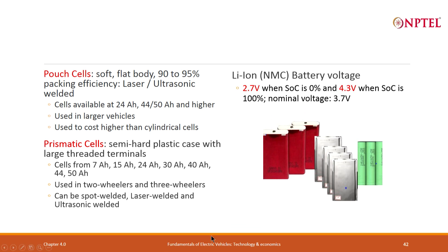The NMC lithium-ion battery is at 2.7 volts when SOC is 0% and 4.3 volts when SOC is 100%. Typically, you operate between 3.1–3.3 volts to 4.15 volts, and the nominal voltage is taken as 3.7 volts. The cell voltage multiplied by AH gives you the capacity in watt-hour.